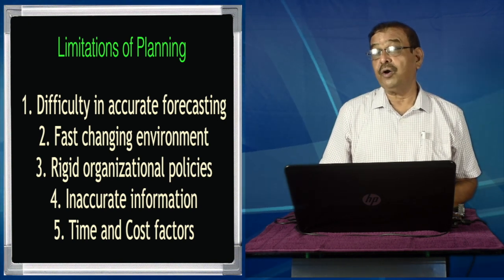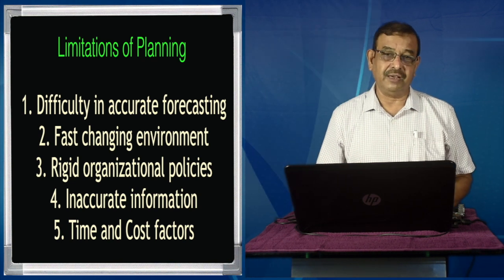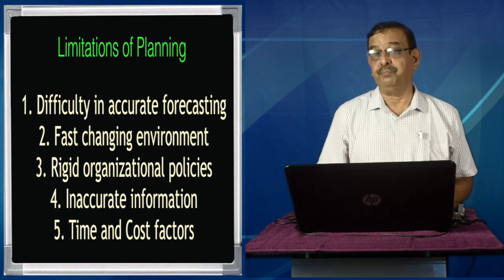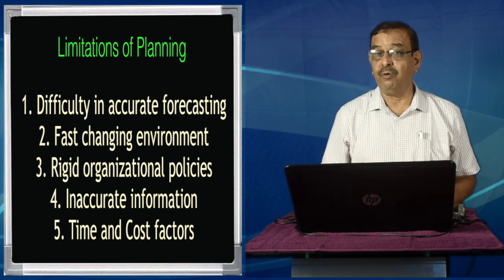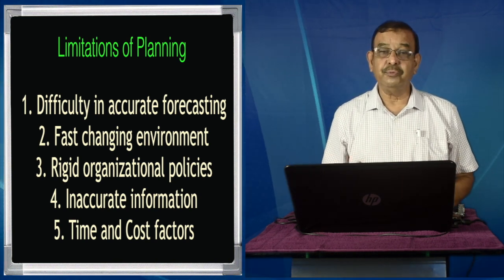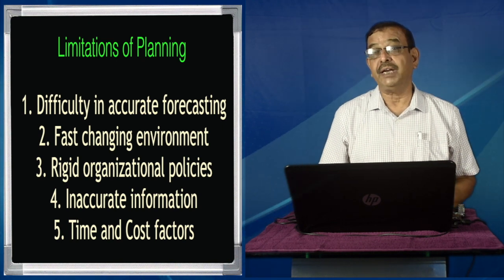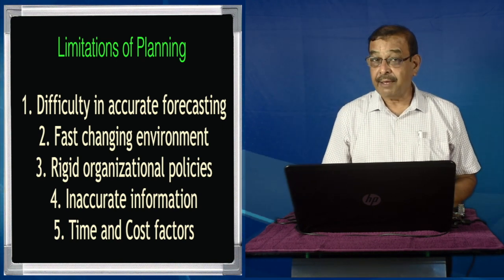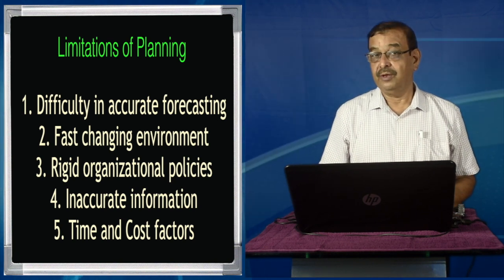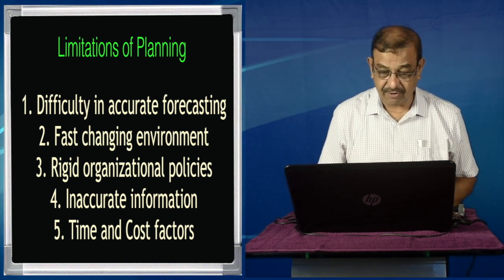The third limitation is rigid organizational policies. The environment is changing very fast, but organizations have got rigid policies and time-bound policies. Planning demands that we need to be flexible, but organizations have their own bureaucratic systems and cannot adapt to changing requirements fast. That is one aspect which planning cannot take care of.